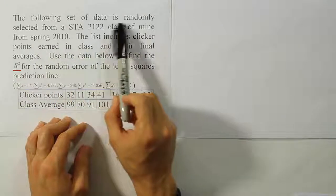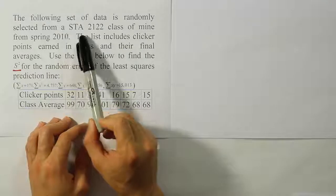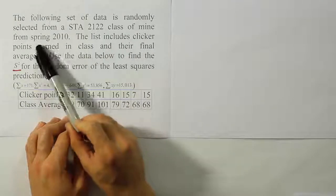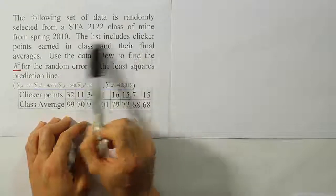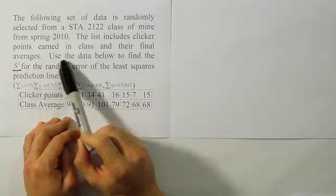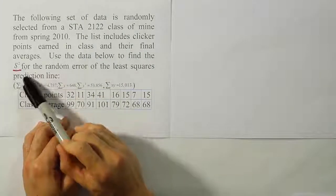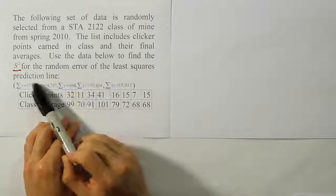Alright, this problem says the following set of data is randomly selected from an STA2122 class of mine from Spring 2010. The list includes clicker points earned in class and their final averages. Use the data below to find the variance for the random error of the least squares prediction line.